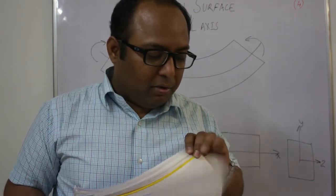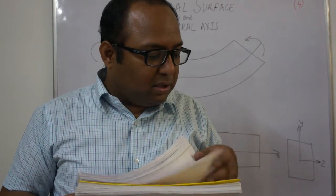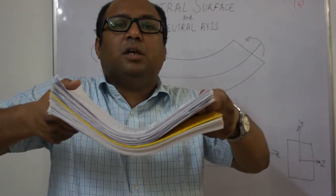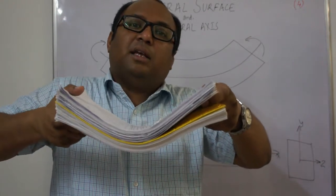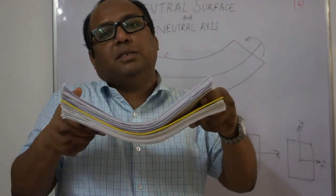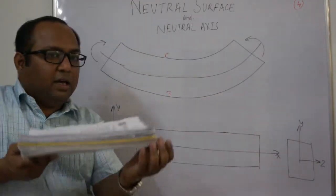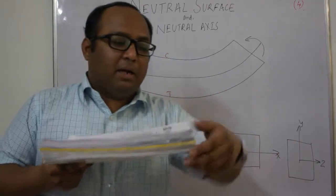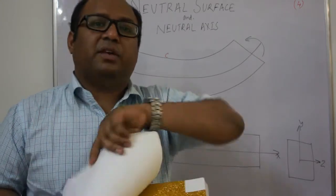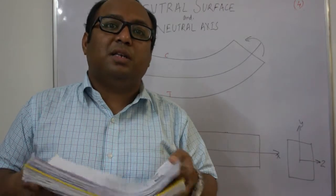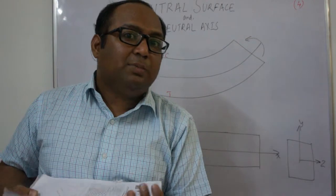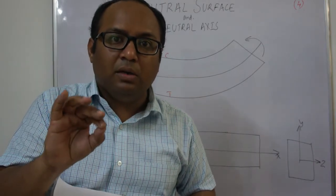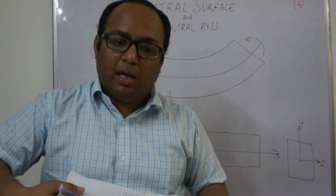I am trying to demonstrate it with this. This is the neutral surface — it is not experiencing any tension or compression. Layers above it are experiencing compression and layers below it are experiencing tension. What you are seeing in this view appears like a line, but in reality it is a surface. This is what is called neutral surface — the layer among many layers which is not experiencing any longitudinal stress, neither tensile nor compressive.